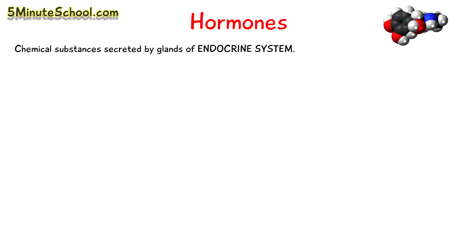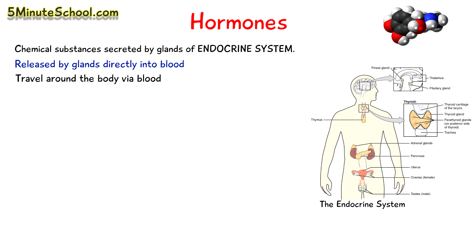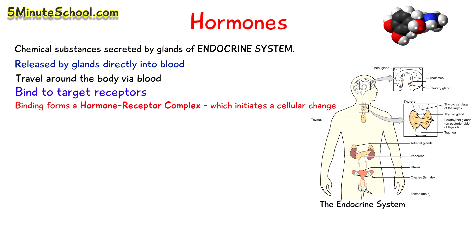Welcome to 5 Minute School. In today's video we're going to be talking about hormones. Hormones are chemical substances which are secreted by glands of the endocrine system. They are released by a gland directly into the blood and travel around the body. They bind to target receptors on cells, form a hormone receptor complex, and cause a change in that cell.